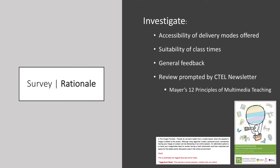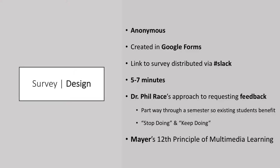We found 11 of the 12 principles we agreed with, but the 12th — the image principle — was a cause for concern. For our design, we created an anonymous survey in Google Forms, linked and distributed via Slack. It took five to seven minutes for students to complete. We used Dr. Phil Race's approach to requesting feedback, meaning students benefit from the feedback because they're still taking the course, and it includes questions like 'stop doing' and 'keep doing'.